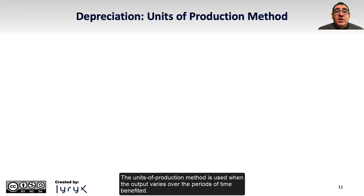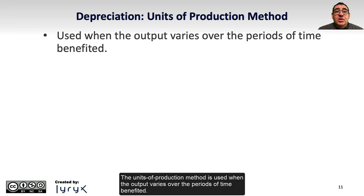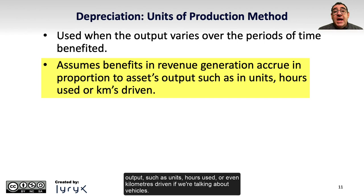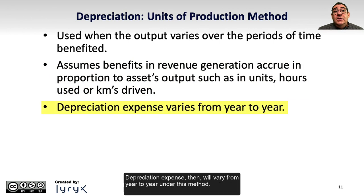The units of production method is used when the output varies over the periods of time benefited. This method assumes that the benefits and revenue generation accrue in proportion to the asset's output, such as in units, hours used, or even kilometers driven if we're talking about vehicles. Depreciation expense will vary from year to year under this method.